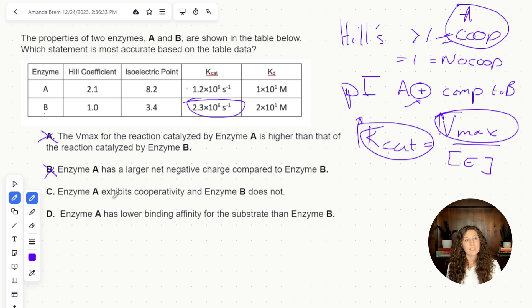For C, we have enzyme A exhibits cooperativity, and enzyme B does not. That matches beautifully with what I noted here. So we're going to leave that one.